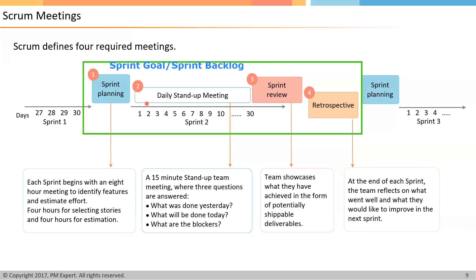In this 15-minute meeting, the team meets at the same location at the same time to discuss three important questions: What did we accomplish yesterday and how did it help us progress towards the Sprint Goal? What are we planning to complete today and how is it going to help us accomplish the Sprint Goal? And what are my risks, issues, and blockers that will prevent me from achieving the Sprint Goal? This meeting is meant for developers — all developers must attend. Scrum Masters or Product Owners may participate occasionally if required, but it is a mandatory meeting for developers only.